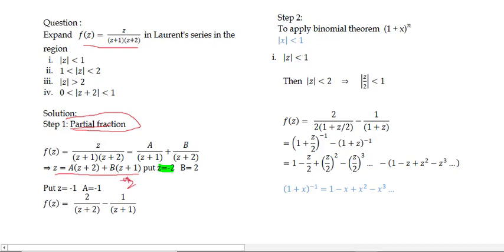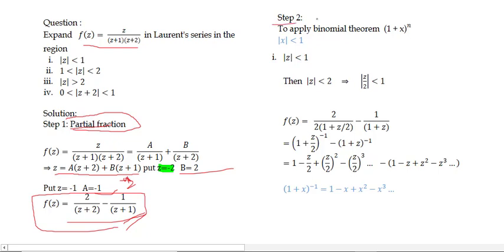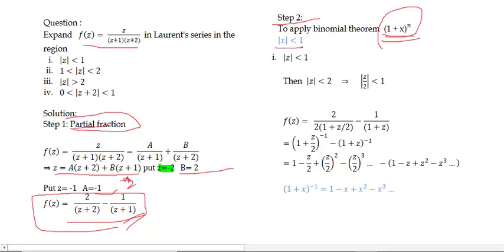Putting z = −2: −2 = B(−1), so B = 2. Putting z = −1: −1 = A(1), so A = −1. Therefore f(z) = −1/(z+1) + 2/(z+2). Step 2: Apply the binomial theorem, remembering that we apply it only when |x| < 1.